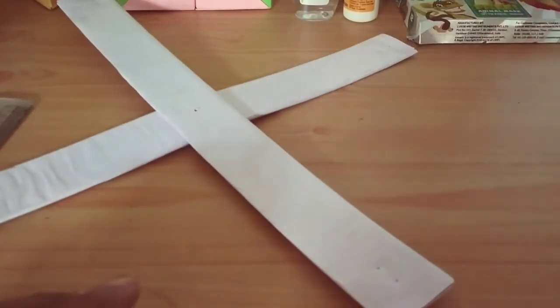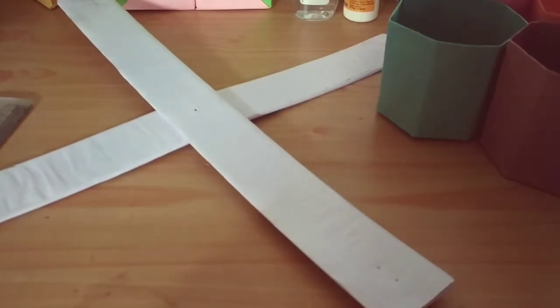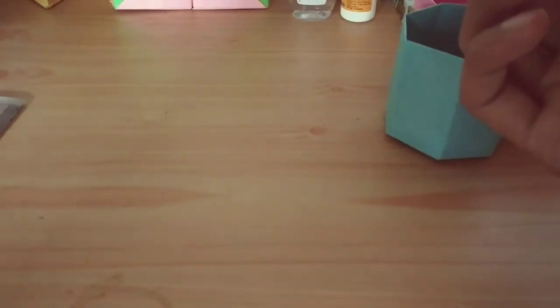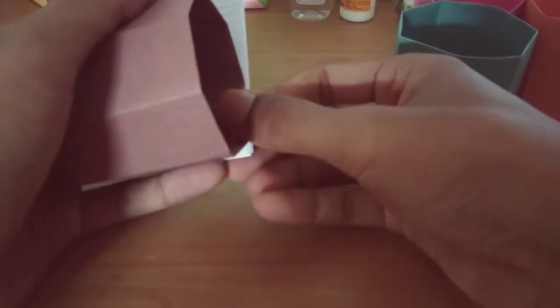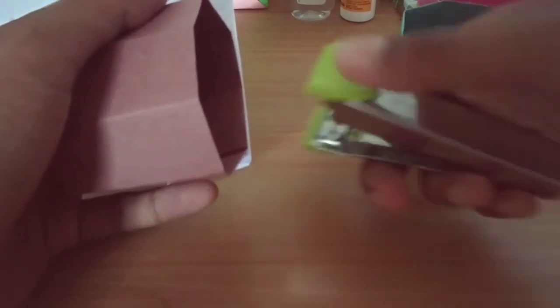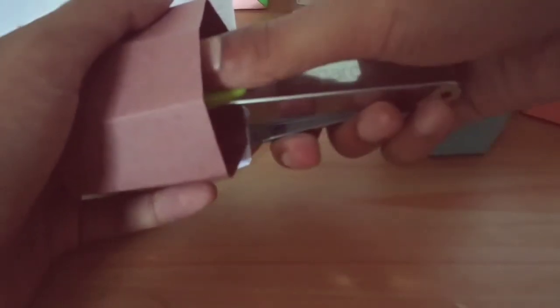The next step you will do is take these 4 paper cups. Take 1 paper cup and then with the help of a stapler, you will staple it on the wings like this. So with the help of the stapler, I will staple it now. 1 cup stapled.